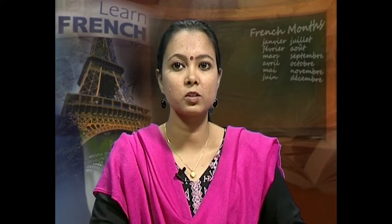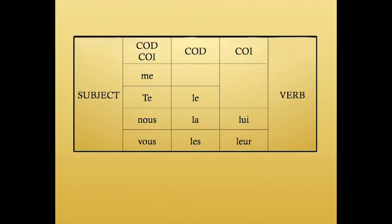Let's now learn how to make a sentence using two object pronouns. The reason why an entire lesson has been built around the position of object pronouns is because their position changes for different constructions. I've provided a chart listing the order of object pronouns when the sentence has more than one object. This is a fixed order which needs to be memorized. The first column consists of object pronouns that can refer to direct or indirect objects.